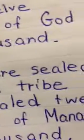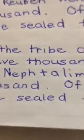Of the tribe of Asher were sealed 12,000. Of the tribe of Simeon were sealed 12,000. Of the tribe of Manasseh were sealed 12,000.